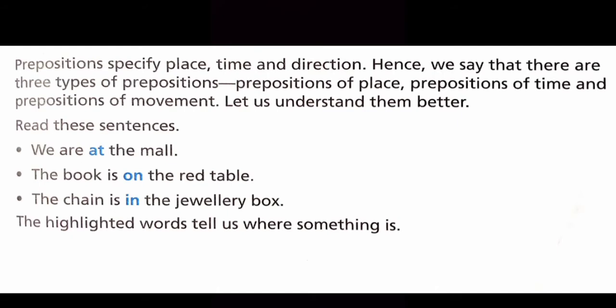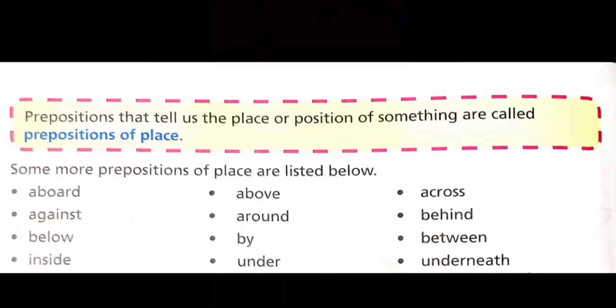Read these sentences. We are at the mall. The book is on the red table. The chain is in the jewelry box. The highlighted words tell us where something is. The prepositions that tell us the place or position of something are called prepositions of place.